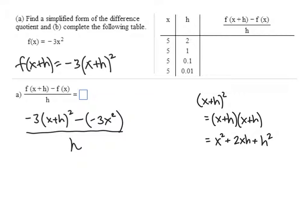Now we're going to multiply that by negative 3. So on the top of my fraction, I have negative 3 times that whole quantity x squared plus 2xh plus h squared. And then minus a minus 3x squared, that's plus 3x squared. And we still have that all divided by h.